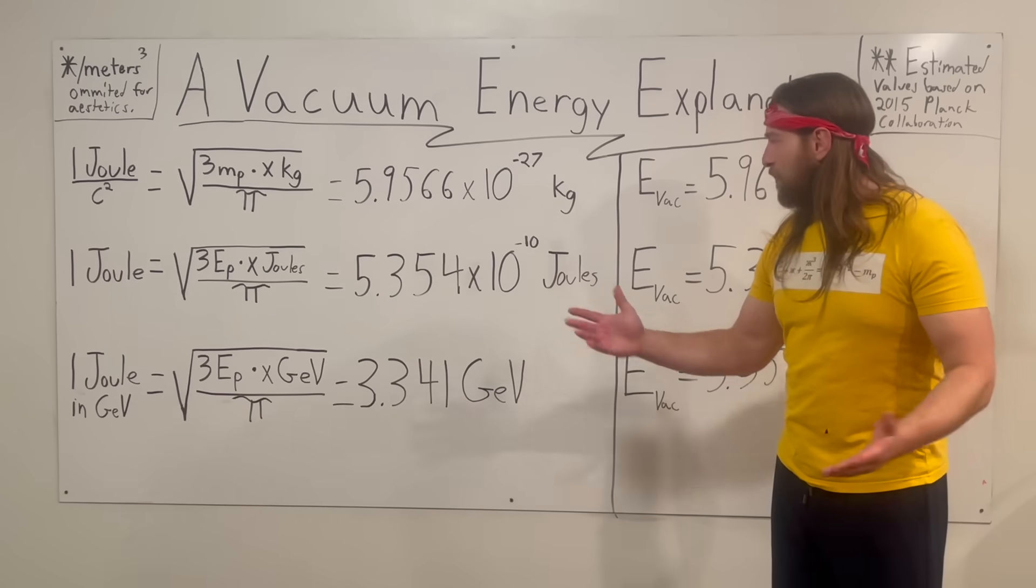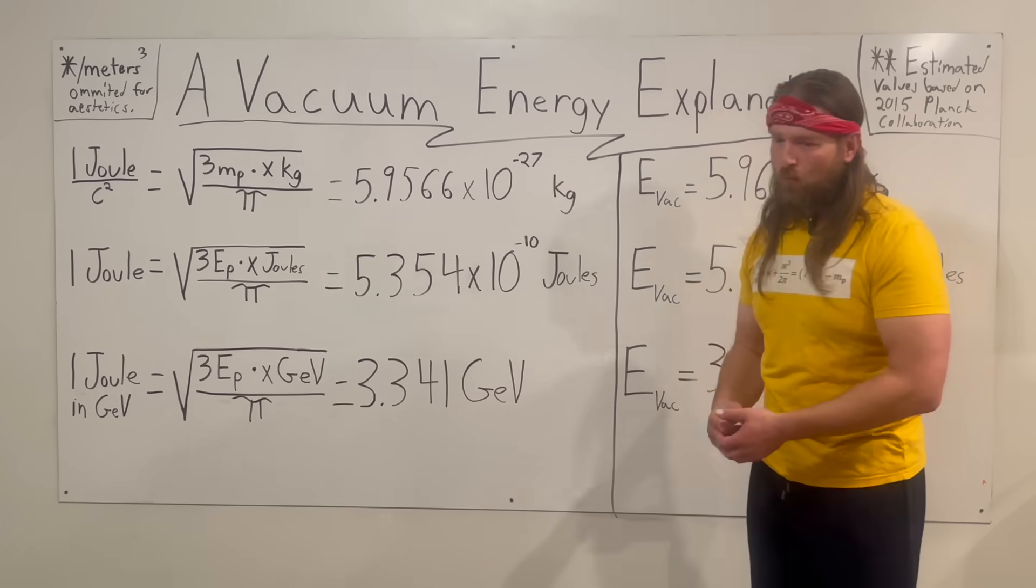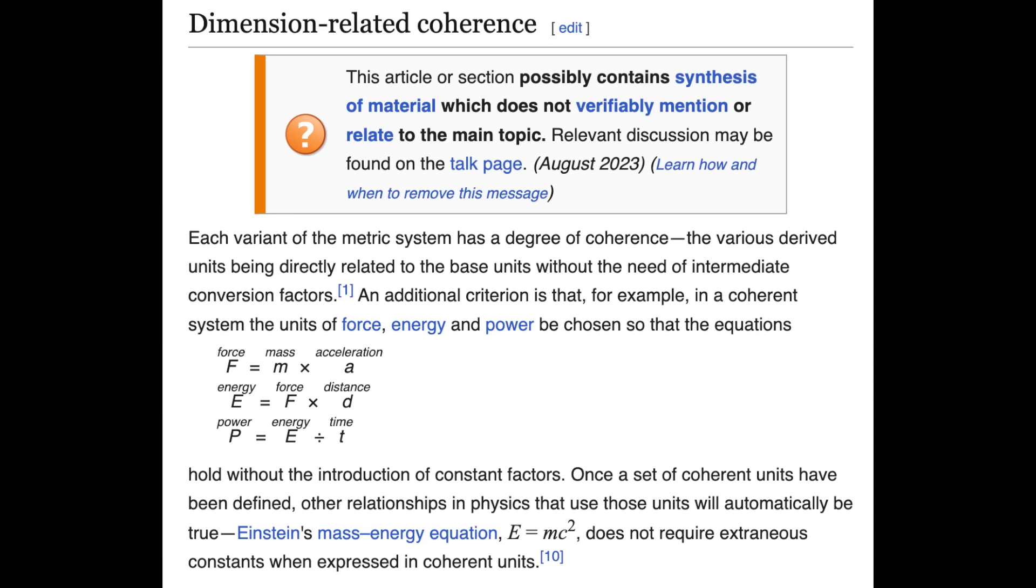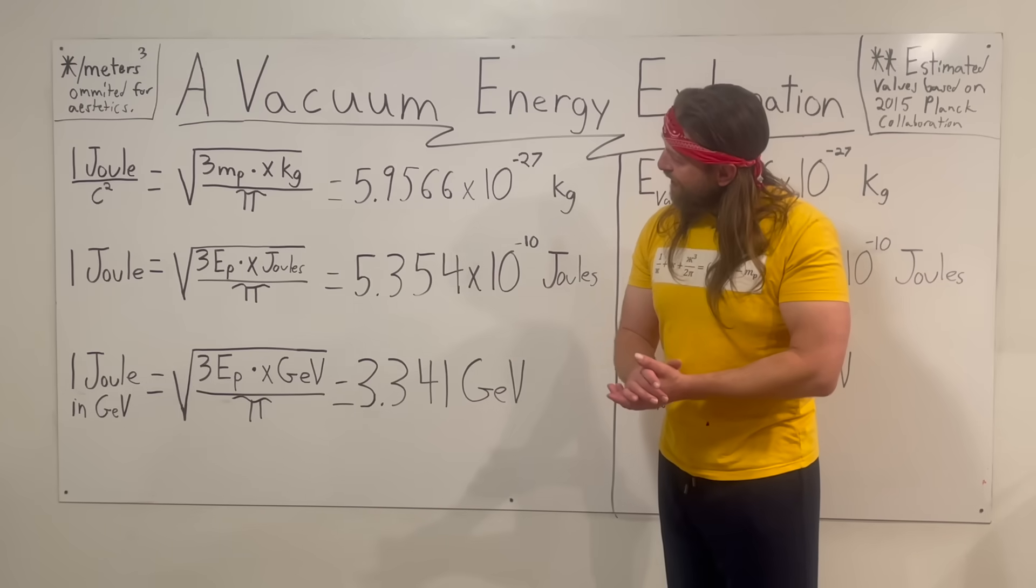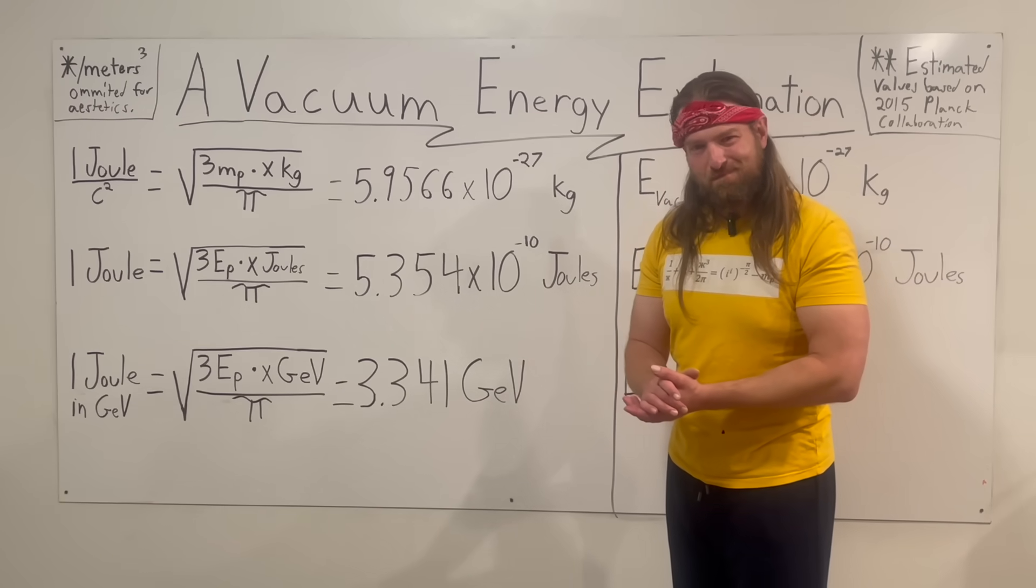I think there might be something here. Why one joule? Well, if we have a coherent system of units and we're going to keep refining them to make them more and more accurate as we figure out what's going on, and we're setting all these Planck values to equivalent ones in their respective dimensions, I don't know—I think it might be a useful thing to look into further. Cool.